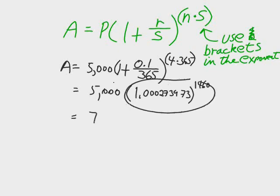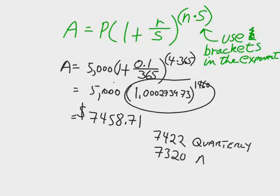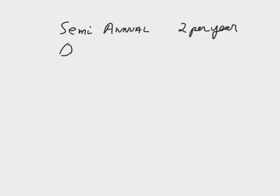Here's the calculation for daily interest savings. Remember that quarterly you got $7,422, annually you got $7,320, you only get $7,458. It really doesn't make a big difference whether you're monthly or daily.